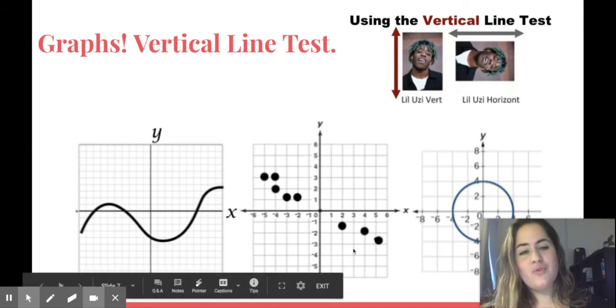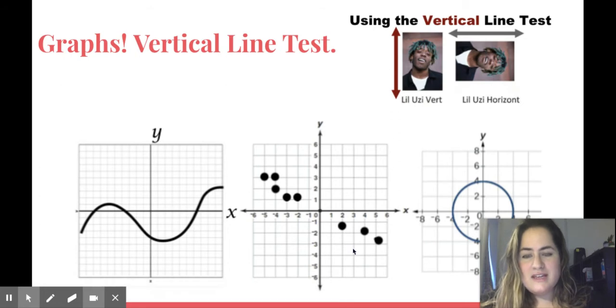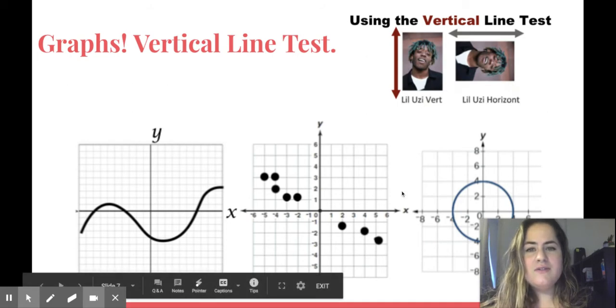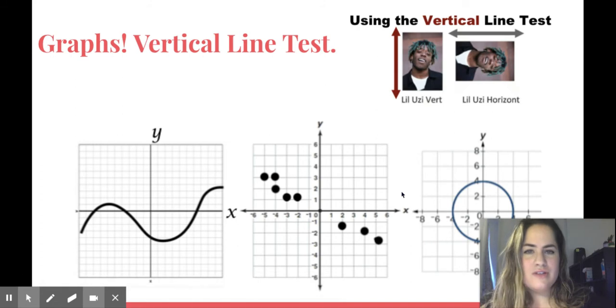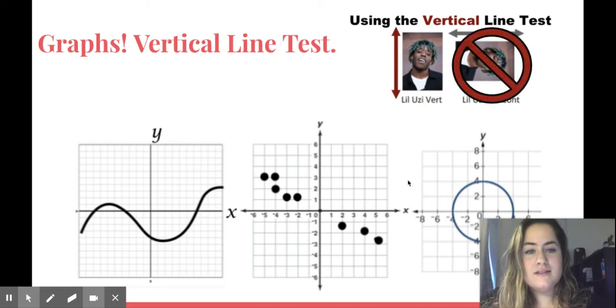If you're given a graph and they're asking you, is this graph a function? This is kind of similar to seeing if X repeats, except we're going to use something visual called the vertical line test. Just to help you remember, there's only a vertical line test. There's no such thing as a horizontal line test. So think of the rapper Lil Uzi Vert. We've all heard of Lil Uzi Vert. Have you heard of Lil Uzi Horizont? No. It doesn't exist.